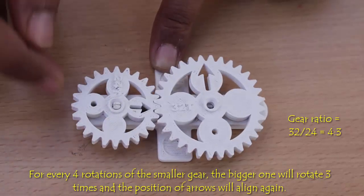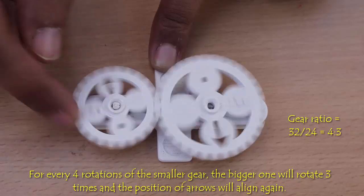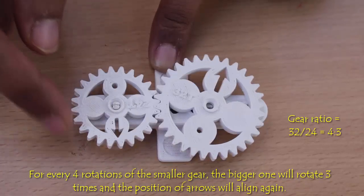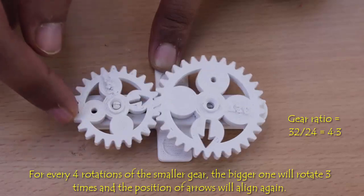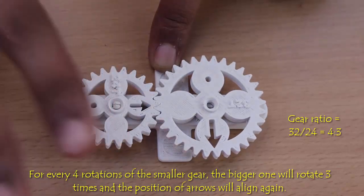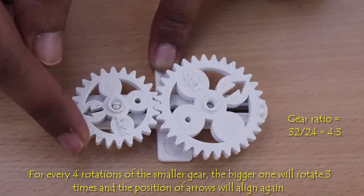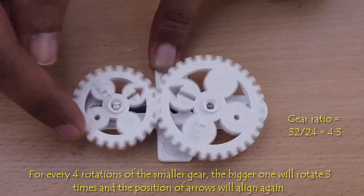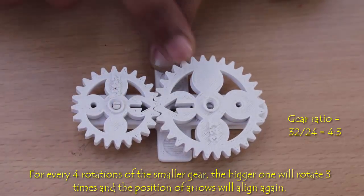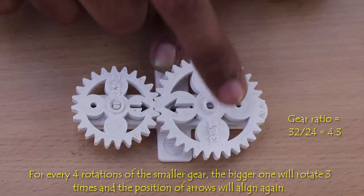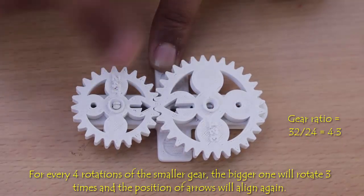So this is one. This is two. This is three. Oh! After four rotations, the 32-tooth gear and the 24-tooth gear are meeting again.